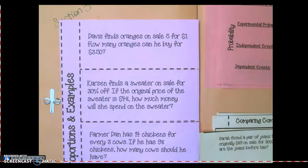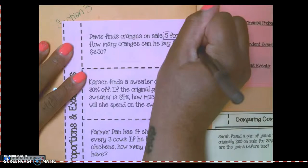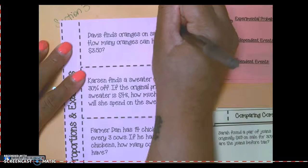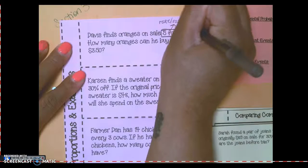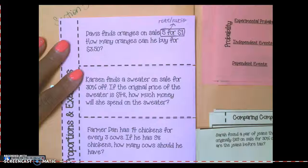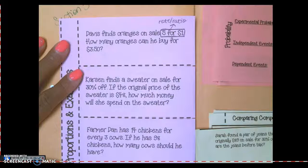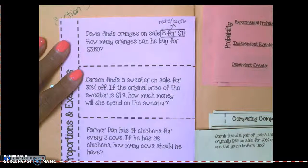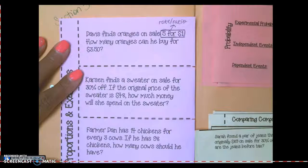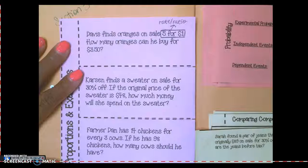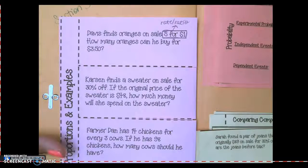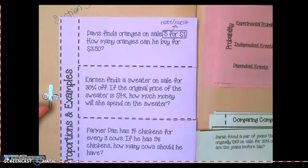First question says Davis finds oranges on sale, five for four dollars. How many oranges can he buy for three dollars and fifty cents? Five for four dollars, what is this called? It's a ratio or rate. What's another way we can say a ratio or rate? $1.89 per dozen. What about gas? How much is gasoline right now? How do they provide the prices for gasoline?